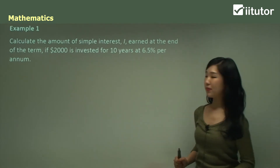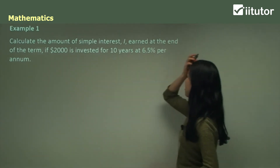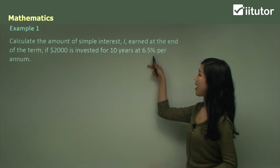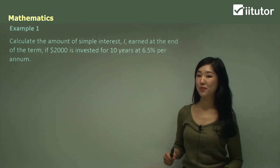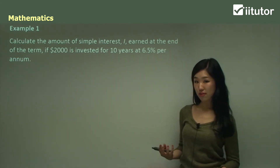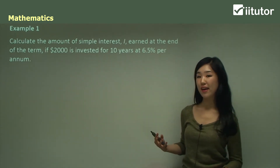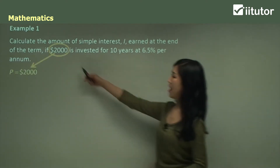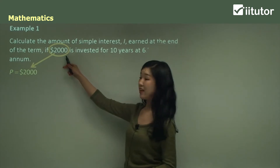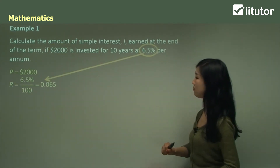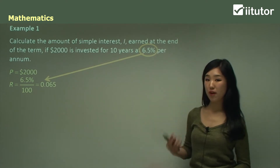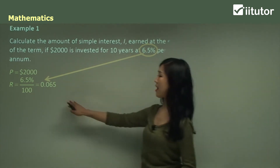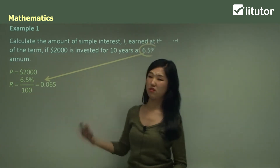Let's try an example. Calculate the amount of simple interest I earned at the end of the term if $2,000 is invested for 10 years at 6.5% per annum. All we need is our formula I equals PRN. P is our $2,000 — that's the principal initial value. R, the rate, is 6.5%, which as a decimal is 0.065.